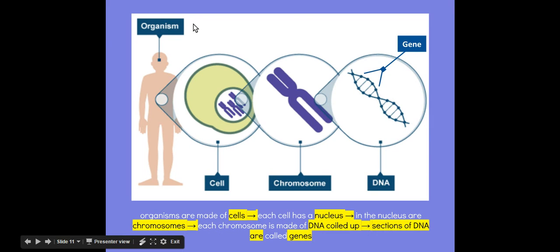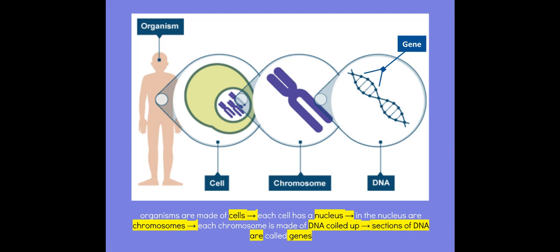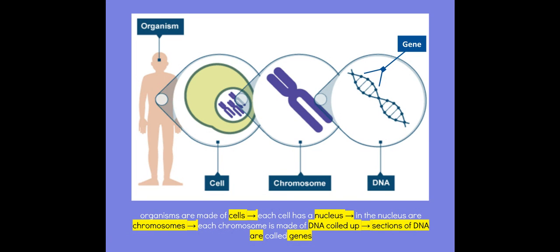Let's go over it again. Inside an organism are cells — all living things are made of cells. Inside every single cell is a nucleus. Inside the nucleus are chromosomes. Each chromosome is made up of DNA that's tightly coiled to fit inside the nucleus. And sections of DNA are called genes. That is the basics of genetics and how you inherit the traits that you have.